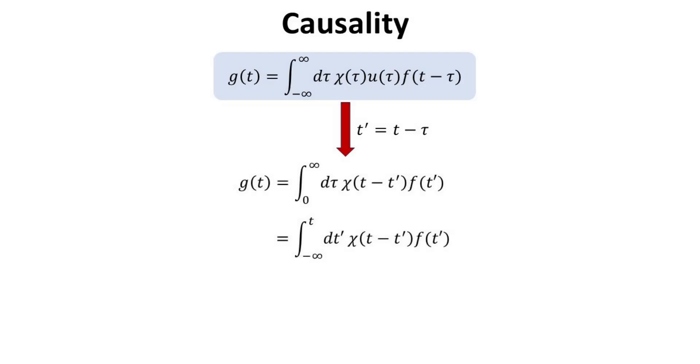By exploiting the step function to reduce the integration limits, and also a change of integration variable from Tau to T', one can arrive at an equivalent expression for Gt. It is immediately apparent that Gt has to be zero when T is less than T'. In other words, there cannot be any output response before any input. This is the mathematical embodiment of causality.